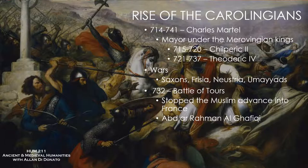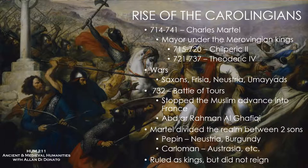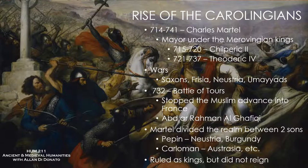At the death of Martel, he divided his realm between his two sons, Pepin and Carloman. Pepin got Neustria and Burgundy, and Carloman succeeded to governance over Austrasia — but not as kings, as Mayors of the Palace. They ruled with the power but didn't have the title. Charles Martel had left the throne vacant.